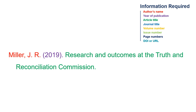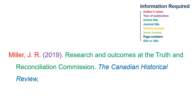Next, add the name of the journal in italics, and follow with a comma. The volume number comes next, which is also italicized. Include the issue number in parentheses, and again follow with a comma.